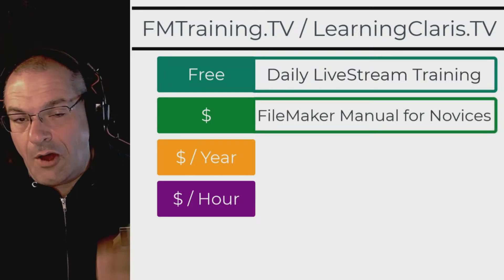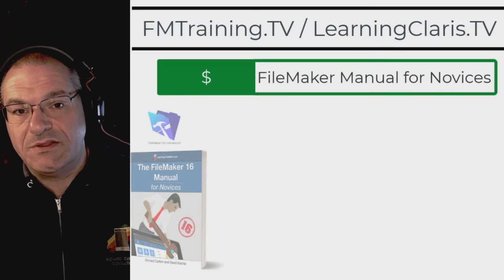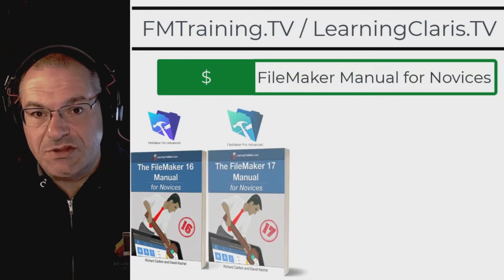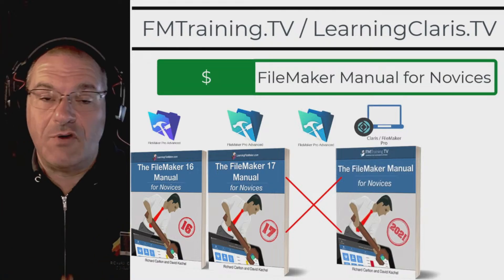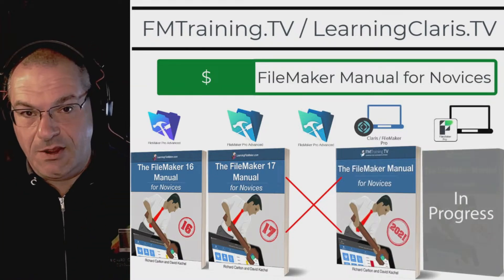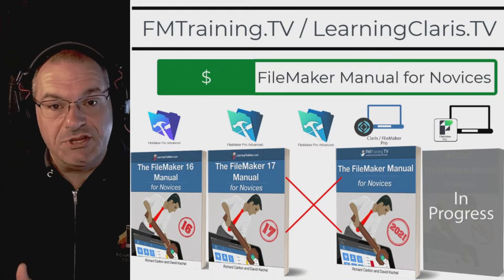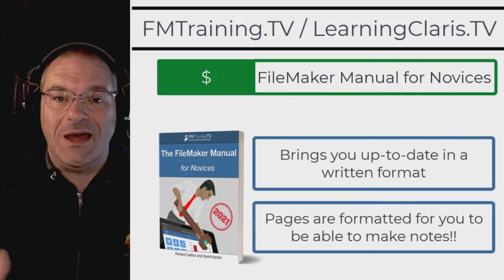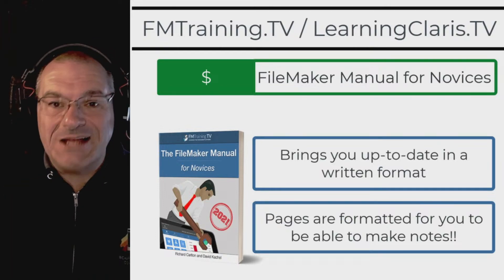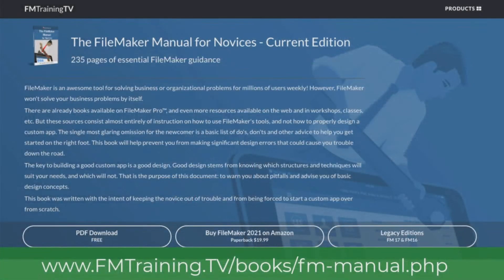Right below the free tier — almost a free tier — is a book that we publish. We published a version 16, a version 17, skipped 18, and now have a version 19. Instead of calling it FileMaker 19, we put the year in, so now it's our FileMaker Manual for Novices 2021. It brings you up to date in a written format with pages you can make notes on, ask questions, and the material pretty much corresponds with our day-to-day training.